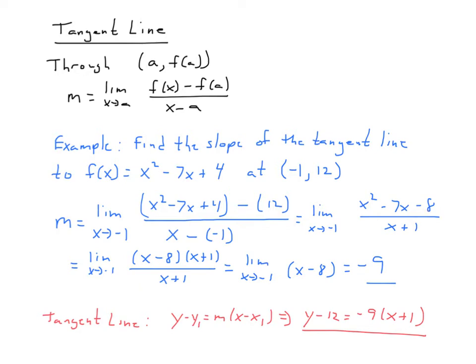I need two numbers that multiply to −8 and add to −7: that's −8 and +1. So this becomes the limit as x approaches −1 of (x minus 8)(x plus 1) over (x plus 1). The (x plus 1) terms cancel, leaving the limit as x approaches −1 of x minus 8. By substitution, that comes out to be −9. So the tangent line, using y minus y₁ equals m times x minus x₁, is y minus 12 equals −9 times (x plus 1). Make sure you are comfortable with these calculations, and if you have any questions, ask in the next class.